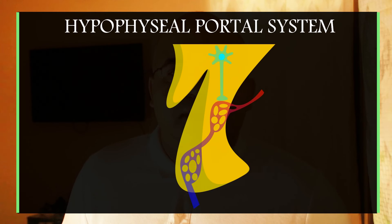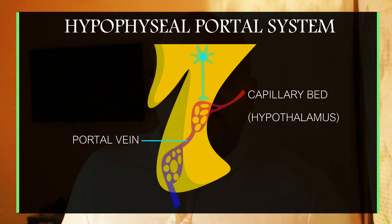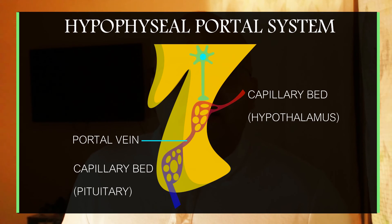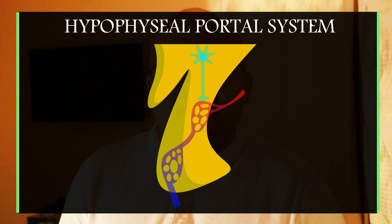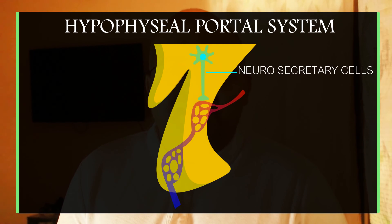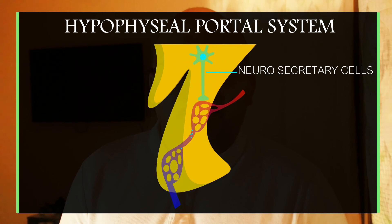How the hypophysis portal system works: capillaries from the hypothalamus arise and unite to form the portal vein, which travels downwards into the pituitary gland and further divides to form a capillary bed supplying the pituitary gland. The hypothalamus contains nerve cells or neurons that have a secretory function — these cells secrete hormones directly into the capillary bed, which travel via the portal vein into the pituitary gland, where these hormones have their effect.